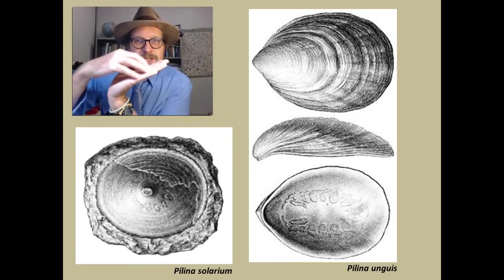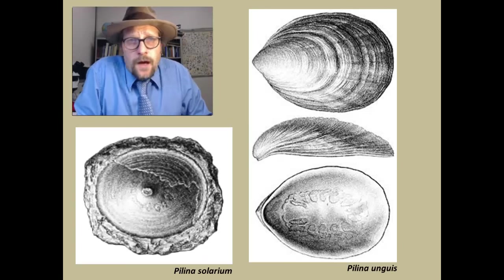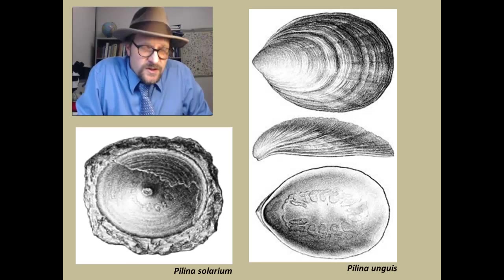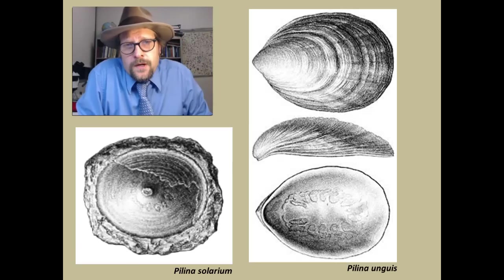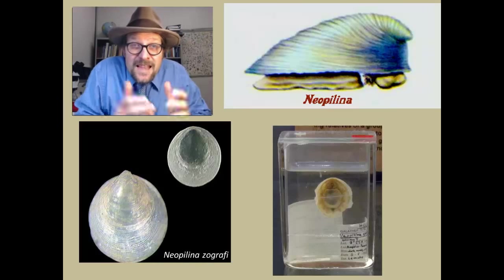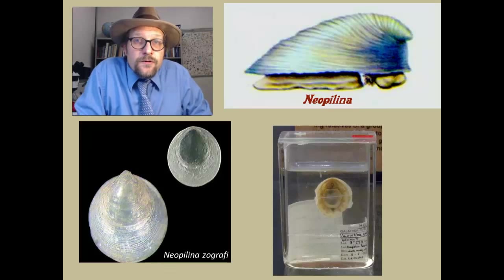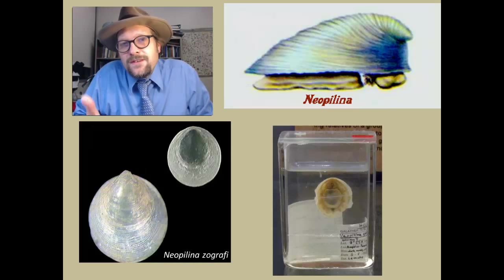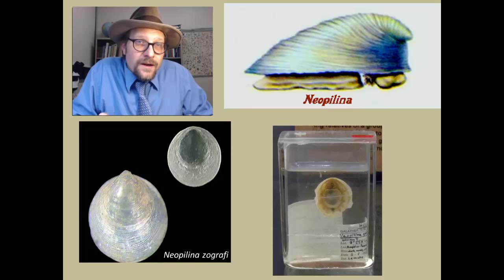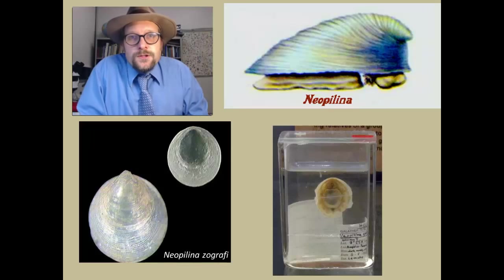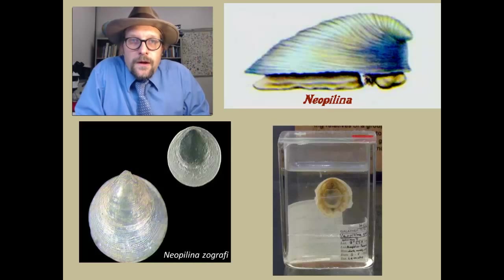For many years, the Monoplacophora was thought to be an extinct group of molluscs, having perished sometime during the late Silurian, with a fossil record from the Cambrian to Silurian. But in 1952, scientists discovered a living member called Neopilinia from dredging the deep ocean floor. This was a really important discovery because it allows us to study a very primitive group of molluscs. Neopilinia has a circle of gill structures around the outer part of the mantle with a central foot. It crawls around the ocean floor eating food that it finds with its mouth, much like a snail does.